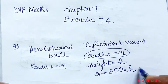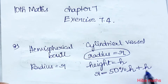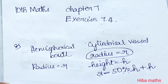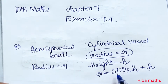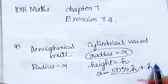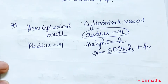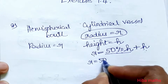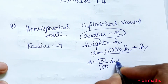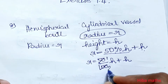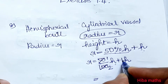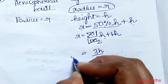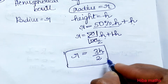Radius is 50% more than height means: r = 50% of h + h = (50/100)h + h = (1/2)h + h = (3/2)h. So r = 3h/2. This is a very important result that we will use to solve the full problem.